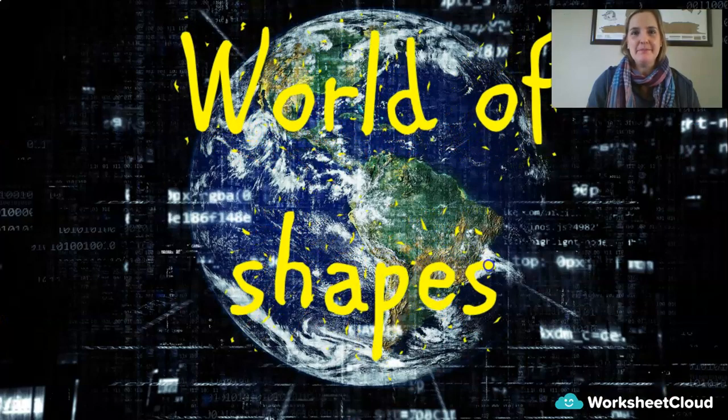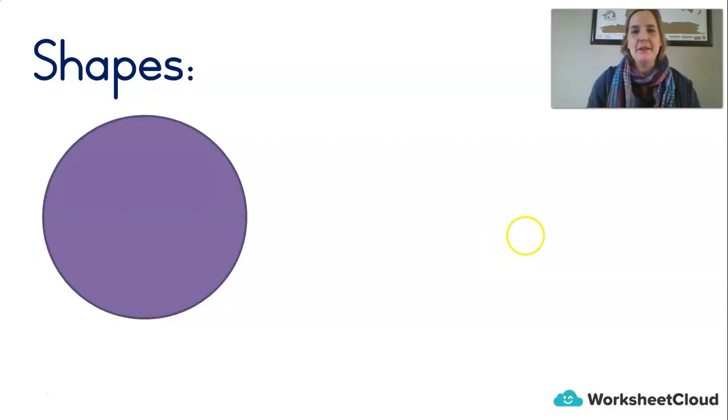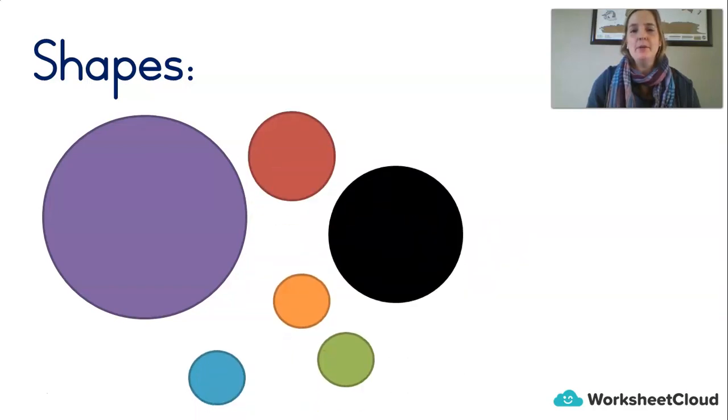The World of Shapes. We're going to go over some that we've already talked about in other lessons. Can you remember? What's this shape called? It's perfectly round, but it's flat. It's a circle. That's right.